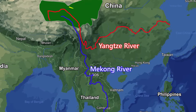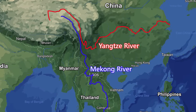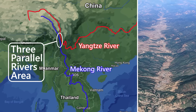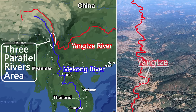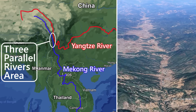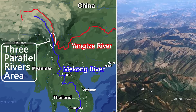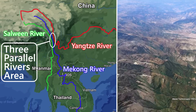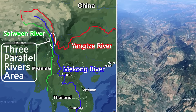After leaving the Tibetan Plateau, the Mekong passes through the three parallel rivers area, where it flows between the huge Yangtze and the Salween River, with spots as narrow as 75km between the three rivers.